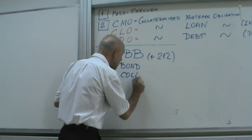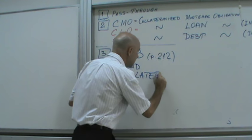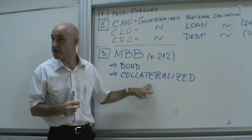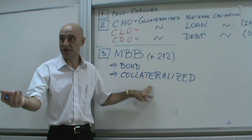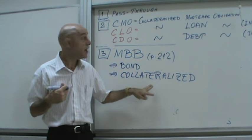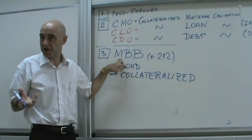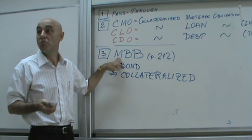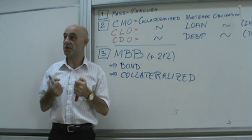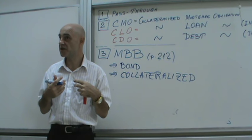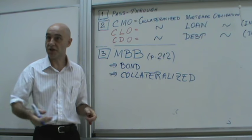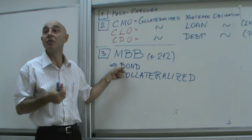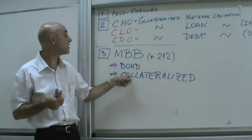The bond is secured with collateral. In case of a default, the investors — the lenders — seize the collateral, which is the mortgages. If the bond defaults, they can take the mortgages, keep them and collect the income, or sell them. It's a straightforward bond, just secured with mortgages.